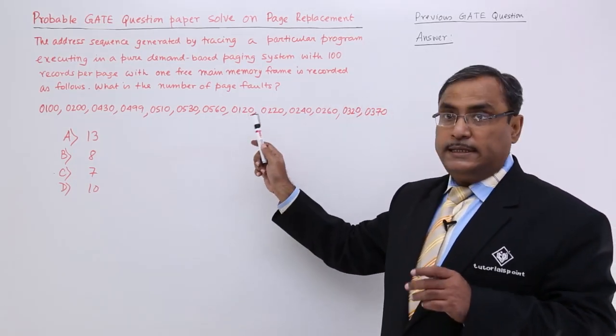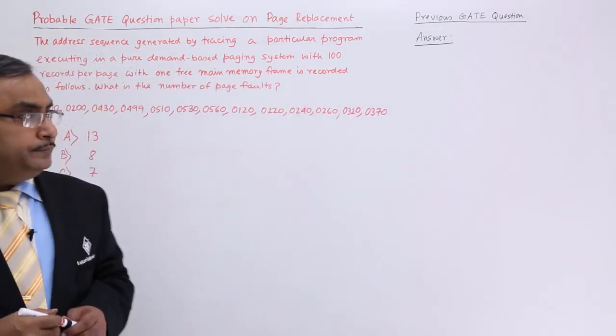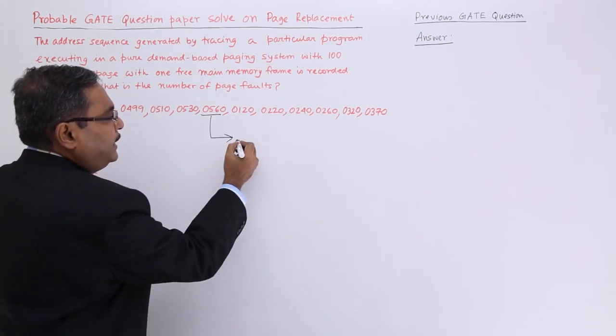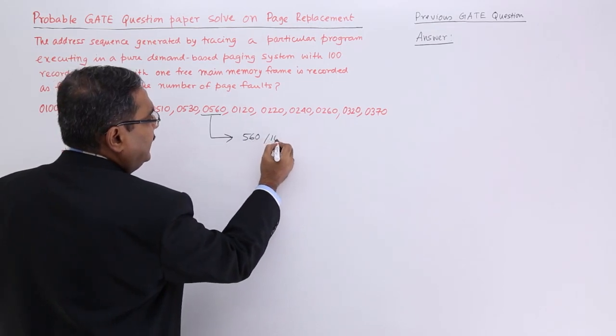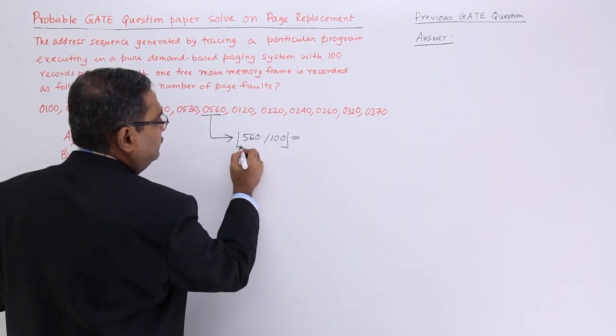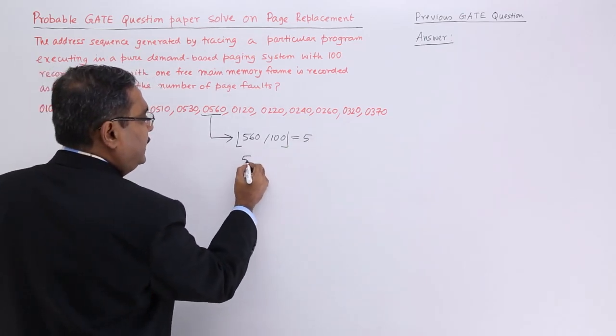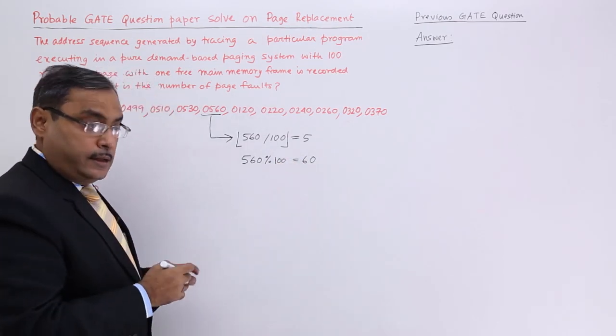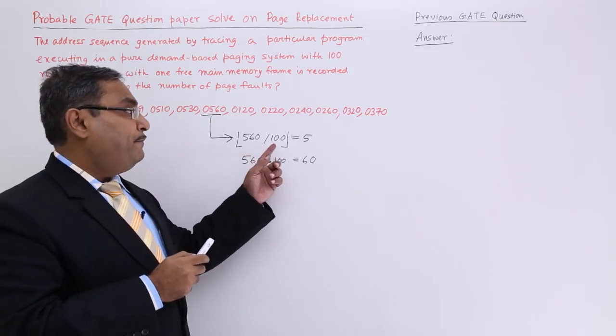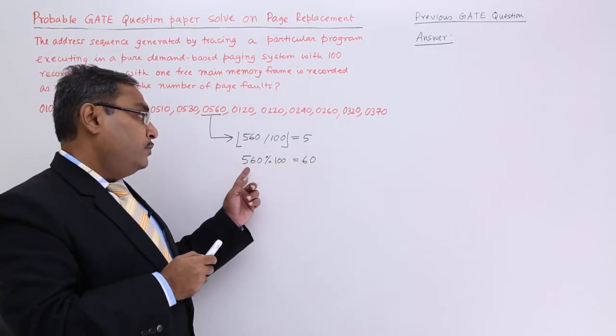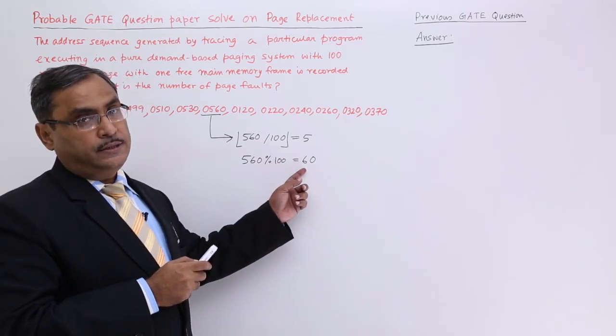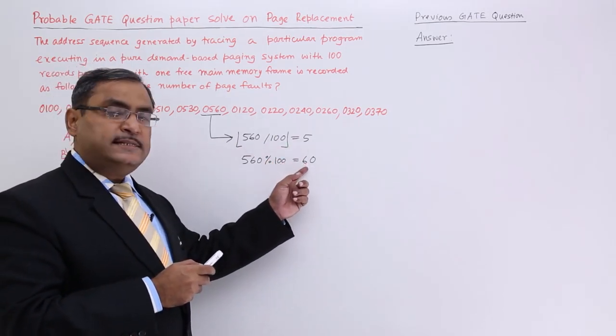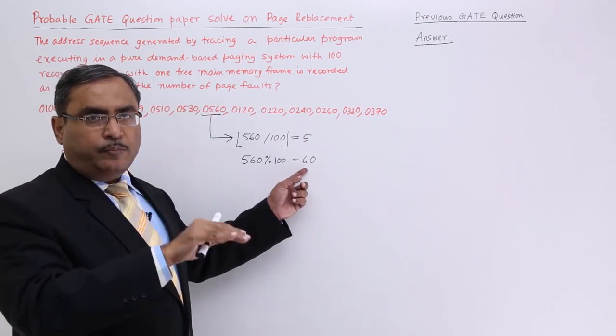What is the number of page faults? Let me take anyone, say 560 arbitrarily. If you divide this 560 by 100 and take the integer part, we are getting 5. If you take this 560 and go for the modulus, we are getting 60. That means 560 is that address which is at the 5th page with the 60th offset from the start address of the page.